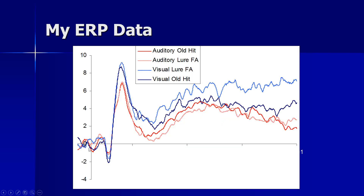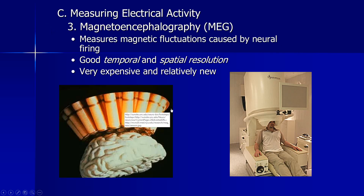Here's some data from my dissertation: participants either saw or heard words during a study period, then tried to remember them at test. People who studied words they had seen versus heard showed completely different brainwave patterns when trying to remember a heard event versus a seen event. Pretty neat data — at least I thought so. That's event-related potentials.